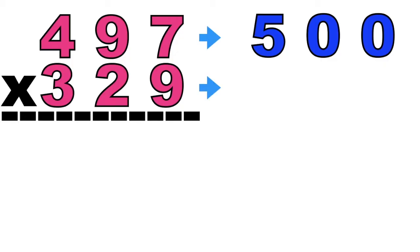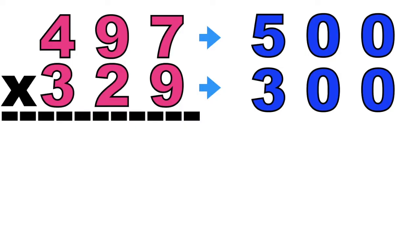Let's proceed to the second factor. We have 329. The highest place value here is digit 3 at the 100th place. And beside digit 3 we have digit 2. Since digit 2 is 4 or less, 329 will become 300.